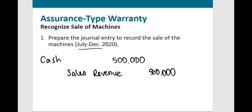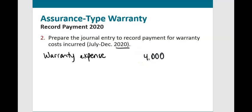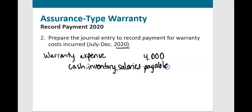The $20,000 is not booked at the time of sale. Between July and December, customers come in with broken machines under warranty. As each customer comes in, the company records warranty expense for the actual costs incurred. We were told $4,000 worth of repairs took place in 2020. The credit depends on whatever cost the company incurred — cash, inventory reduction, or salaries payable.